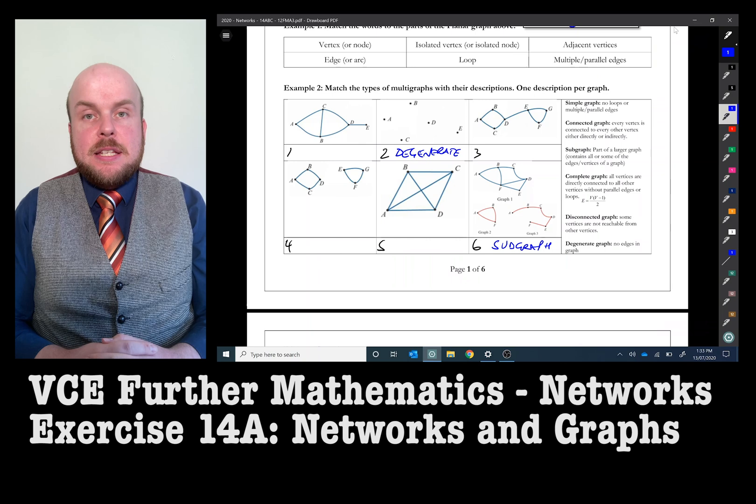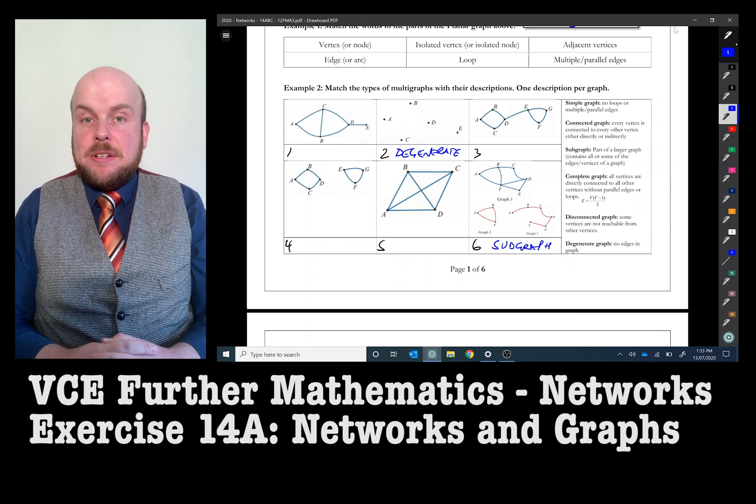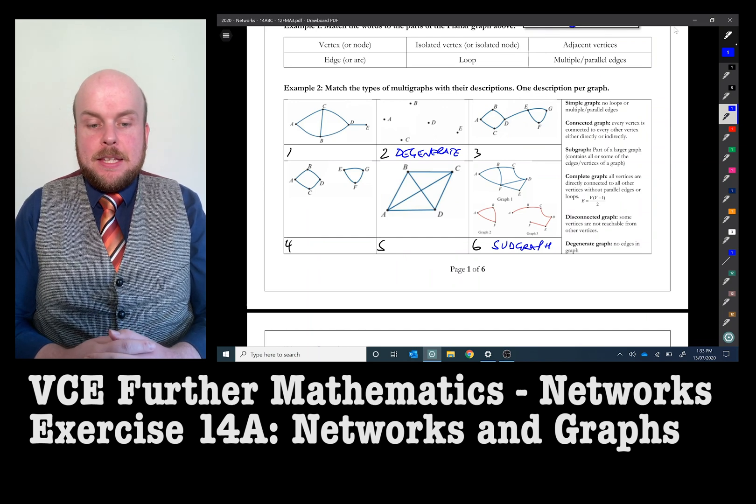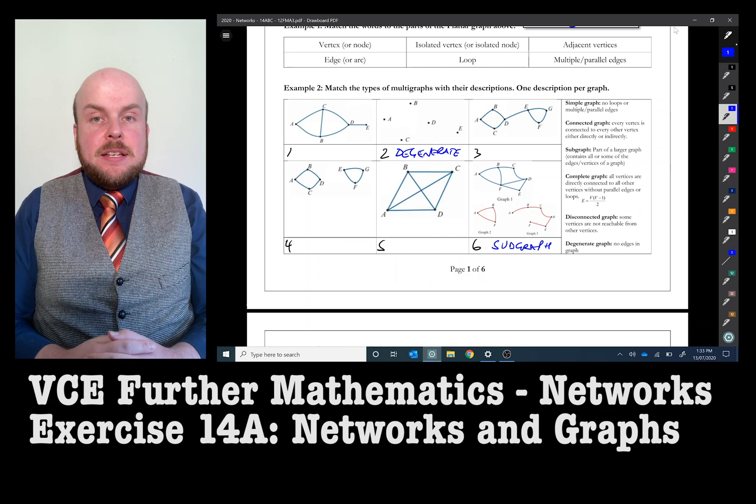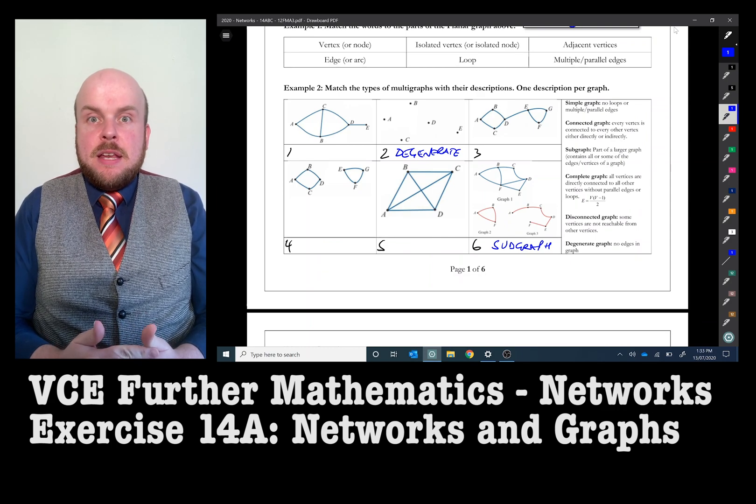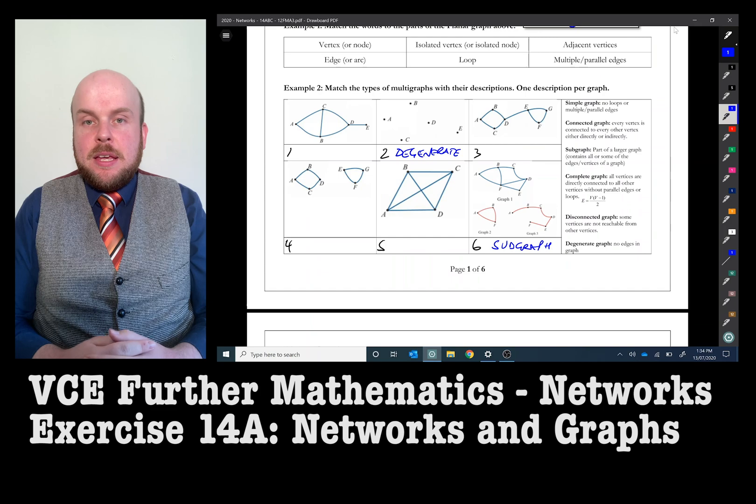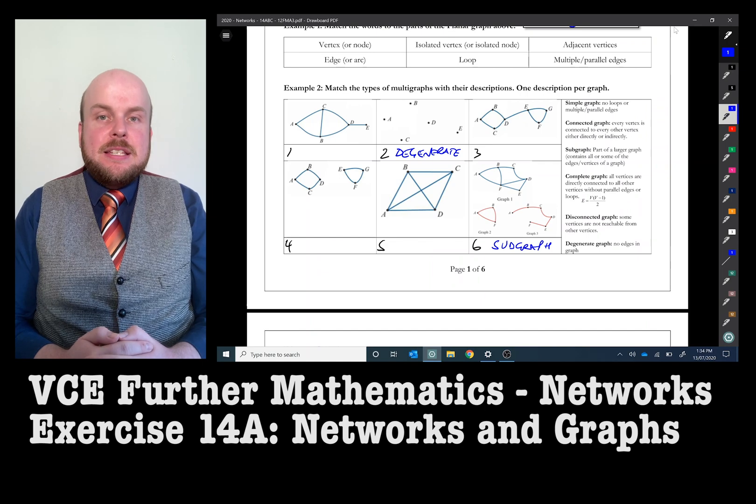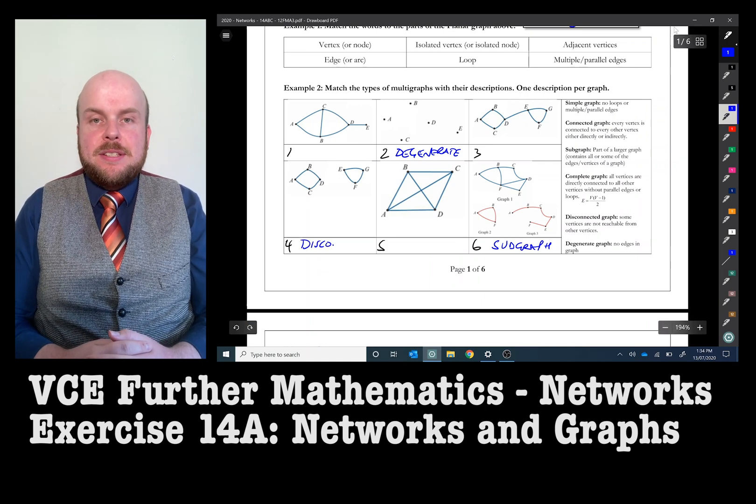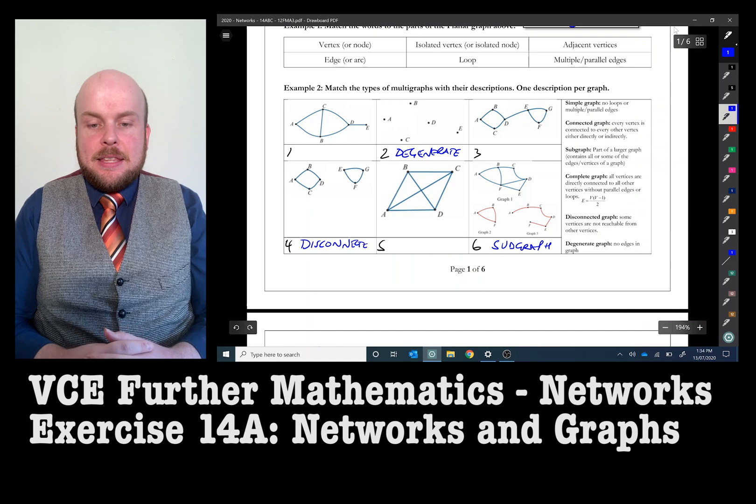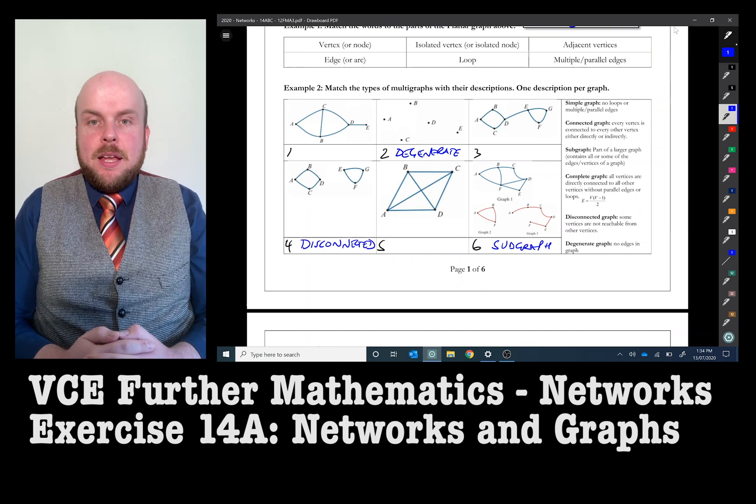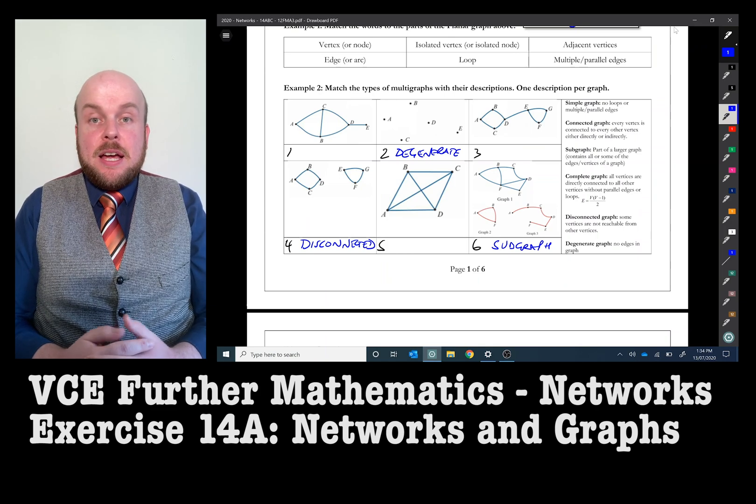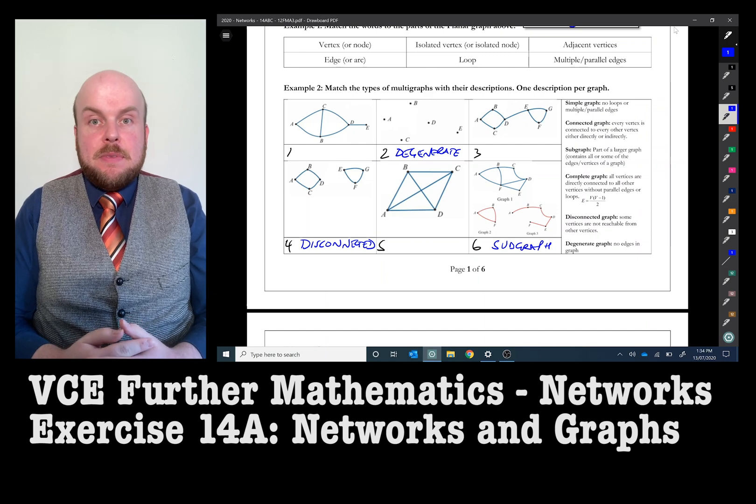It is important when identifying a subgraph that it has the same connections from the same vertices. A disconnected graph is one where the network has some of the vertices connected by edges, but there are two distinctly different sections or two or more distinctly different sections that are not connected together by a bridge. A bridge is an edge that connects two vertices together if they are connecting separate network graphs.